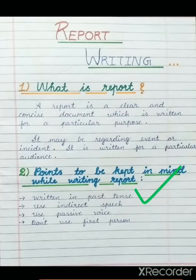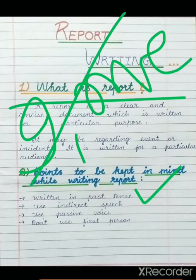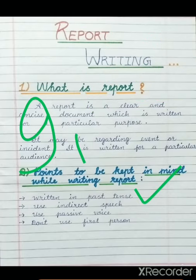Third, use passive voice. Fourth, don't use first person — because it is indirect speech, we cannot use words like 'I' or 'me'. Avoid using these.